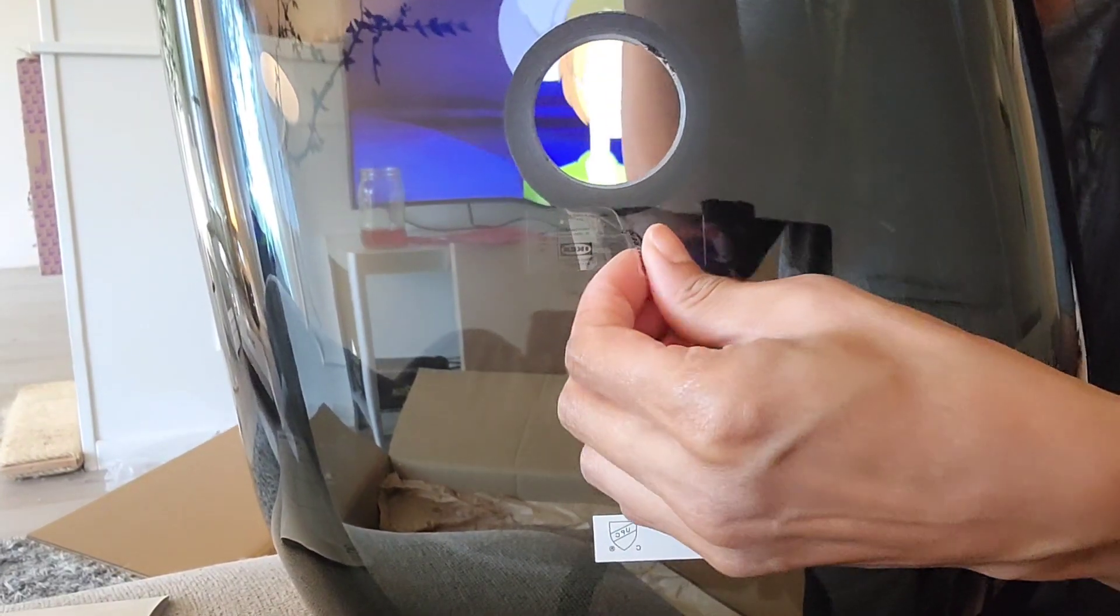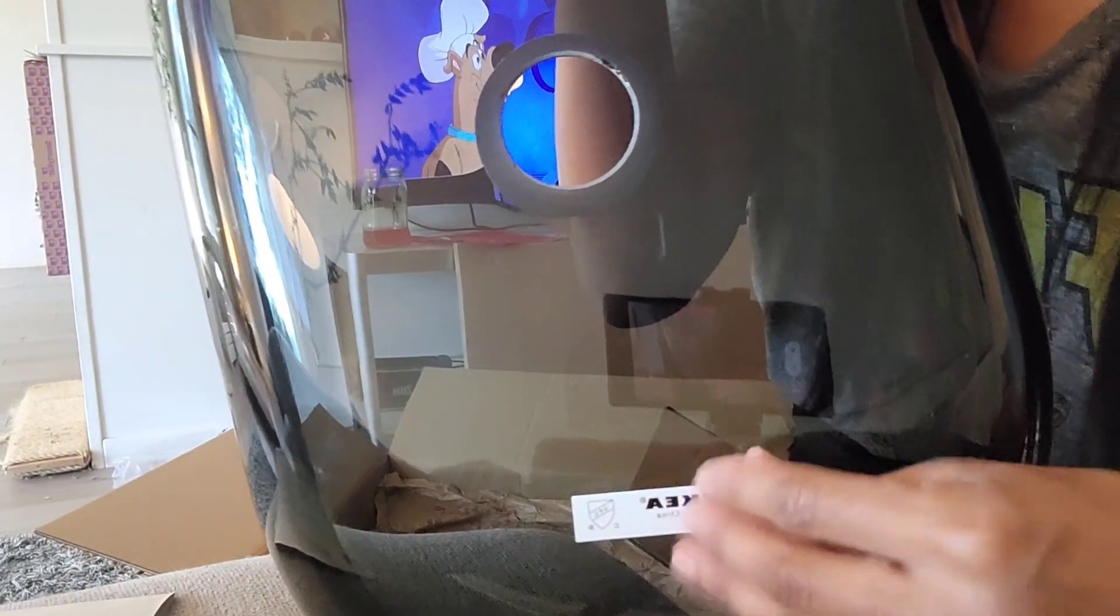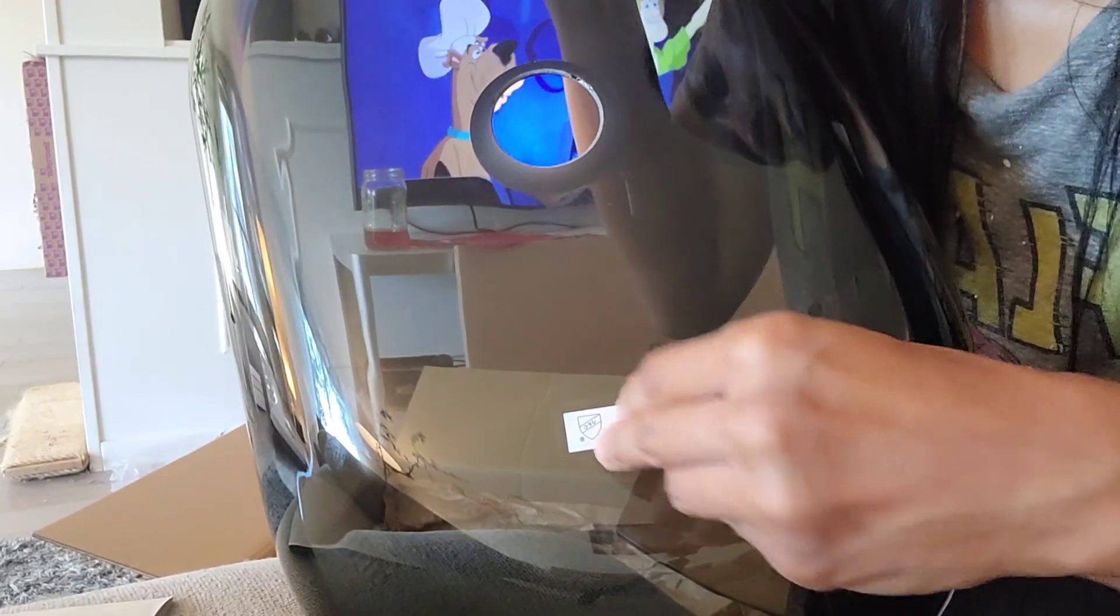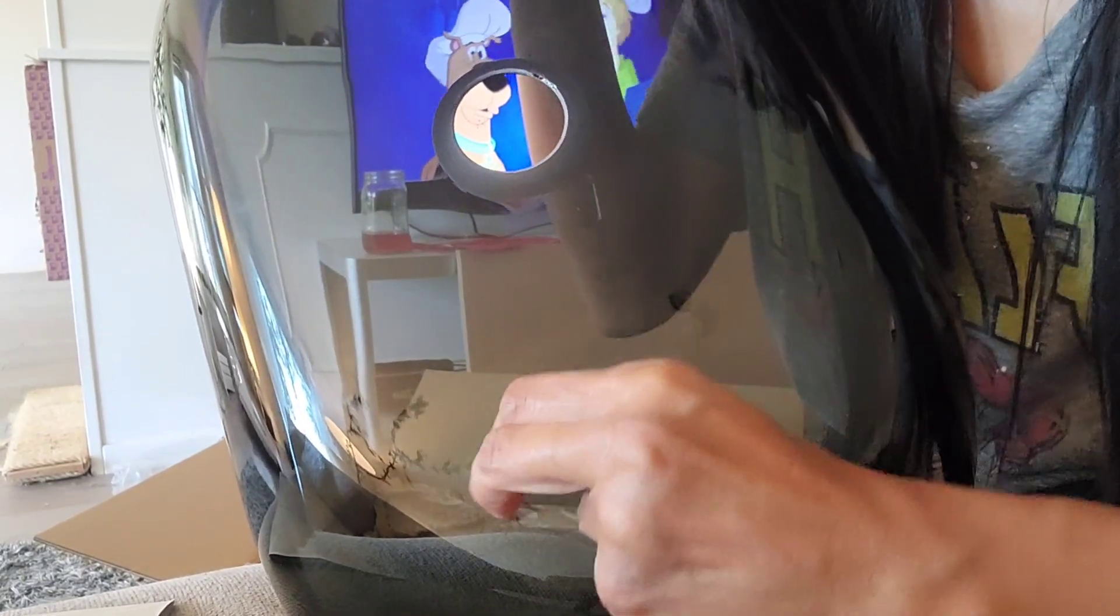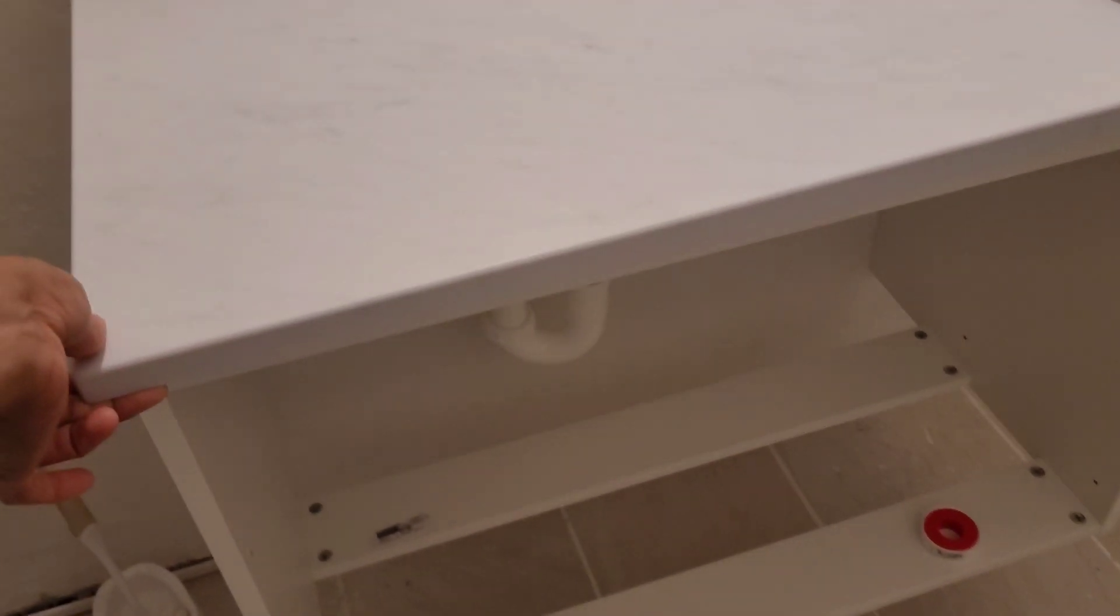Make sure you take off the stickers on the bottom just because it will show right underneath. And I'm pretty sure you'd like to have a nice classy appearance for your bowl. In my previous video, I assembled this cabinet, but the countertop wasn't on it.